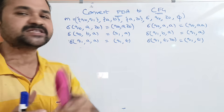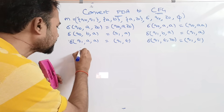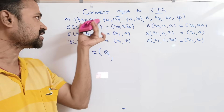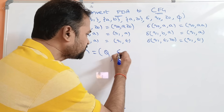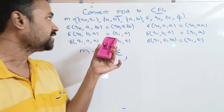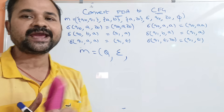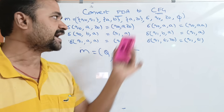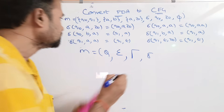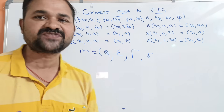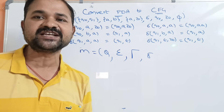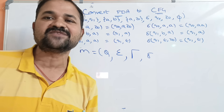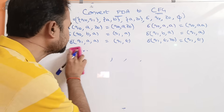We know that a PDA is represented with the help of 7 tuples. M equals Q, where Q means finite set of states — here Q0 and Q1 are the states. Next is sigma, the input alphabet, which contains 2 symbols: A and B. Next is tau, the stack alphabet, which mainly contains 2 symbols: A and Z0. Next is delta, the transition functions — totally 6 functions are given. Q0 is the initial state, Z0 is the initial symbol of the stack, and F is the final state. So here totally 6 productions are given.